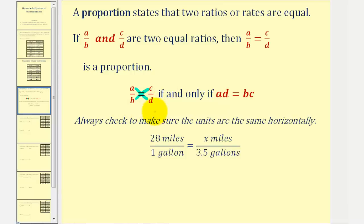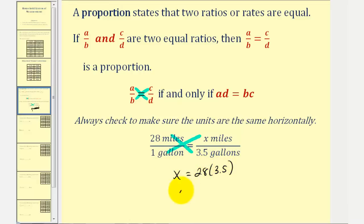As an example, let's say your car gets twenty-eight miles per gallon, and you want to determine how far you can drive on three and a half gallons of gas. Twenty-eight miles per gallon is a rate, which we see here in fraction form. We can set this equal to x to three point five gallons, where x is the number of miles you can drive on three point five gallons. Now we can cross multiply and solve for x. Ignoring the units for a moment, x must equal twenty-eight times three point five, which is ninety-eight. And we can see the units would be miles.